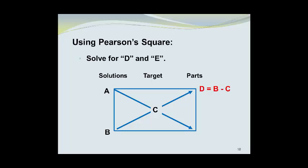This will allow us to solve for D and E. D is going to be equal to the value of B minus the value of C. E will be equal to A minus C, except this will give us a negative number because C is usually going to be larger than A. So in order to get a positive number, we will subtract C minus A.